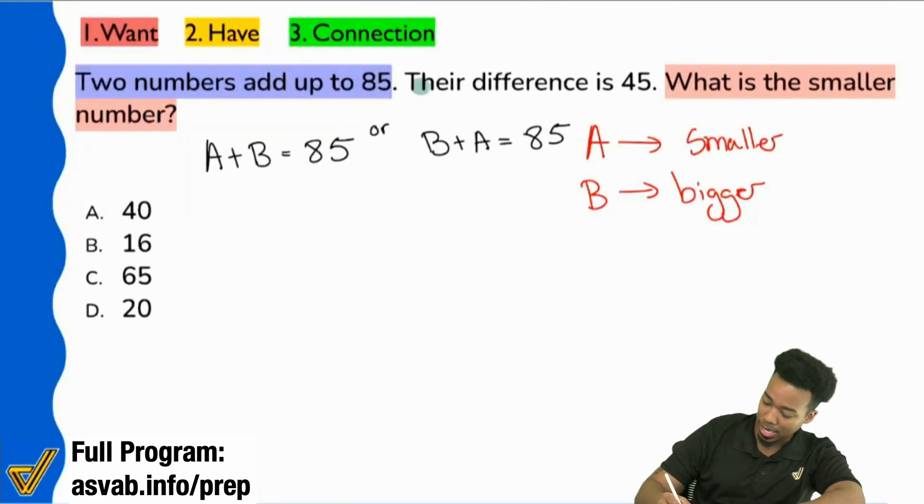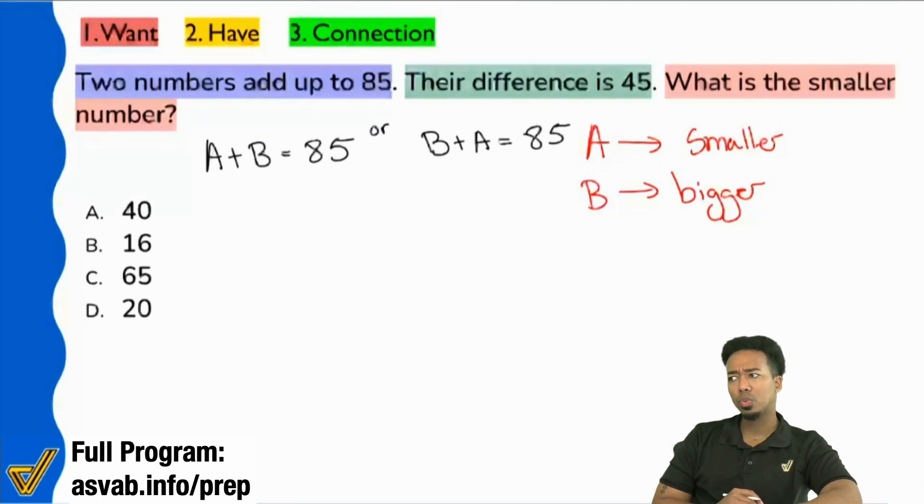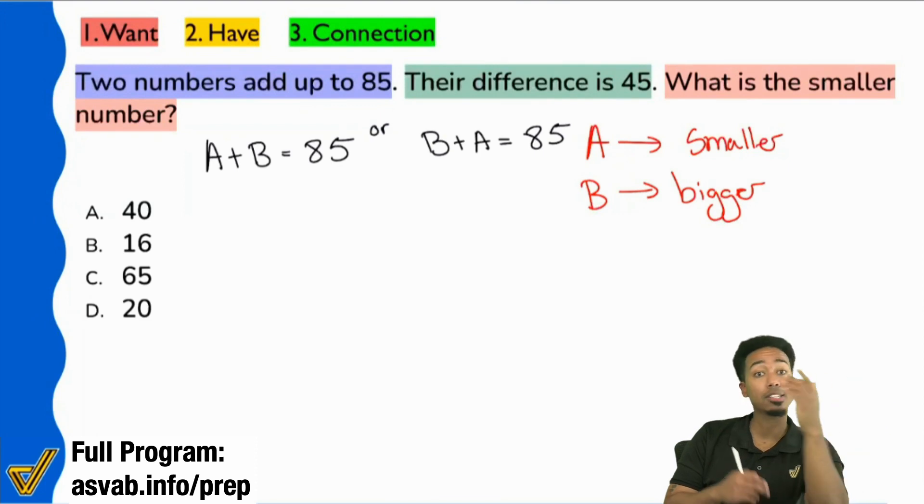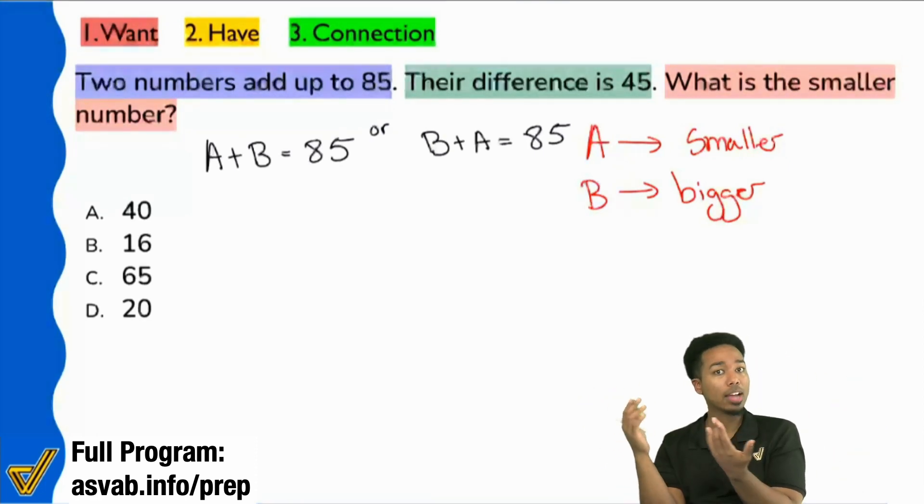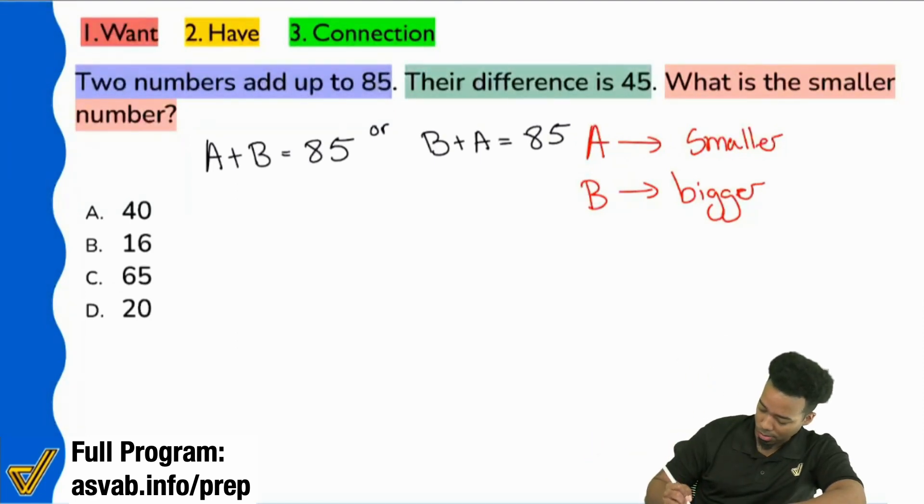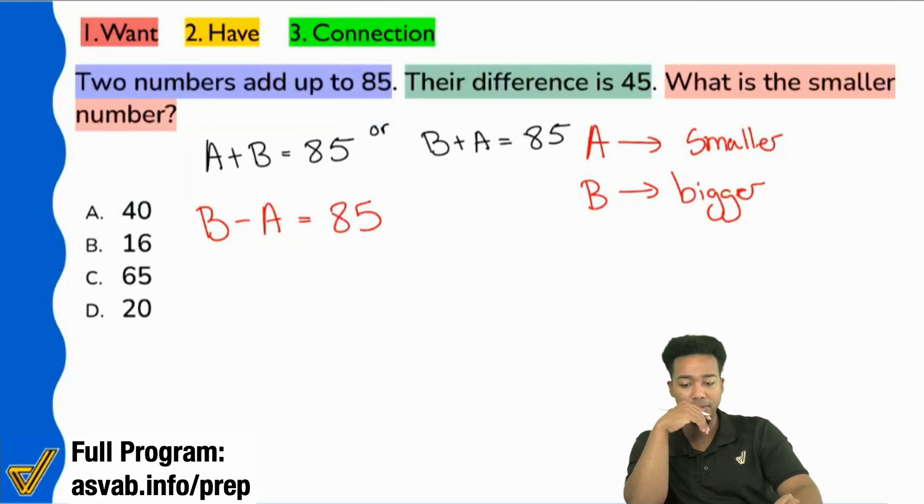The other sentence says their difference is 45. Which way should we write it if A is the smaller number? How should we write their difference when you subtract the numbers to get 45? Yeah, you should use B minus A because in this case B is the bigger number. When you're subtracting, you want to use it first. So we'll write B minus A equals 45.